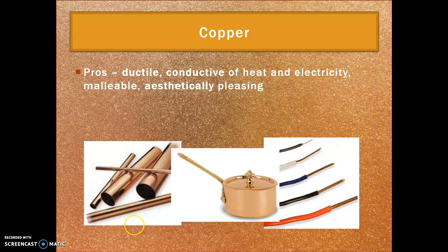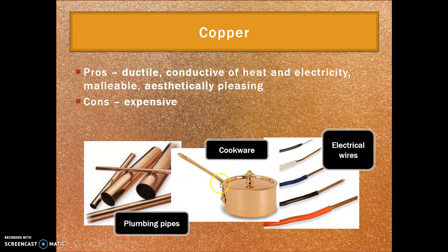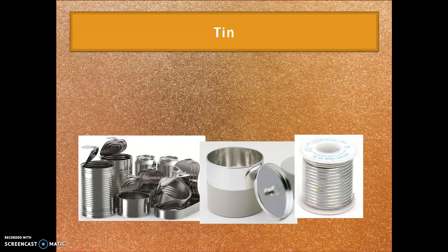Copper is very ductile and an excellent conductor of heat and electricity, making it ideal for electrical wires in your walls. It also makes for amazing cookware and is malleable and aesthetically pleasing. It's great for pipework because it conducts heat and can be joined really well. However, it is expensive — that's why the cookware costs so much, and why people will break into buildings to strip electrical wires from the walls just to sell for scrap.